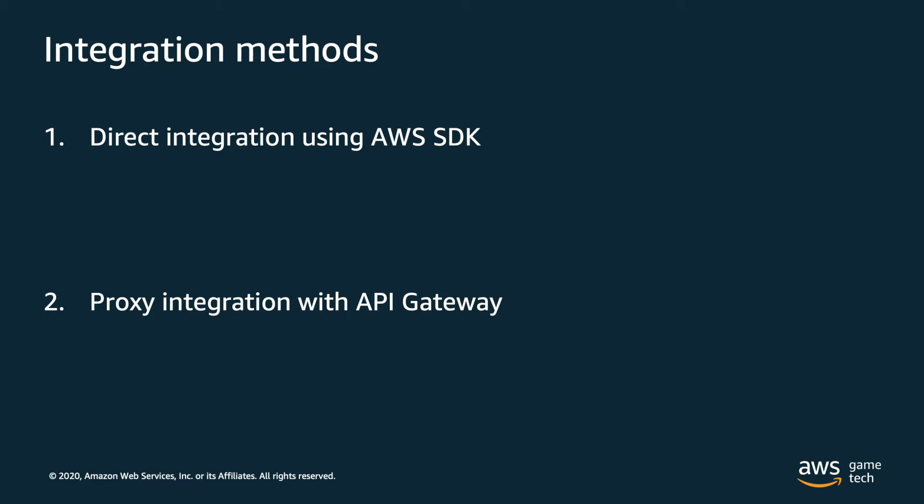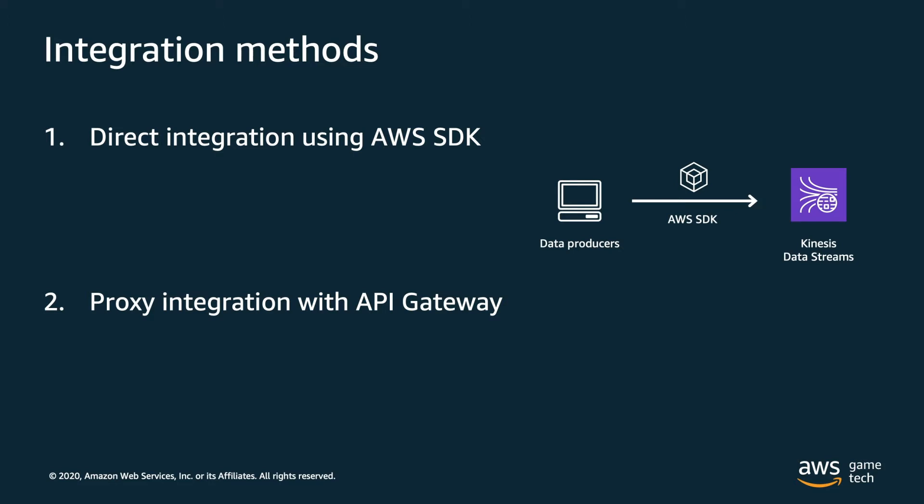For option one, what this looks like is sending data from data producers directly to your Kinesis data streams using the SDK, as shown here in this diagram. You would use this method if you want to publish events from your games and services directly to Amazon Kinesis without using an API Gateway, which removes the added costs associated with API Gateway. This is also really useful if you're a game developer who's new to AWS services but familiar with C Sharp and .NET libraries.